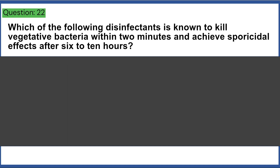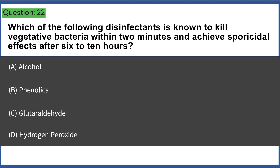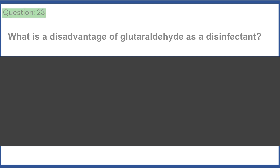Which of the following disinfectants is known to kill vegetative bacteria within two minutes and achieve sporocidal effects after six to ten hours? a) alcohol, b) phenolics, c) glutaraldehyde, d) hydrogen peroxide. Answer: C, glutaraldehyde.